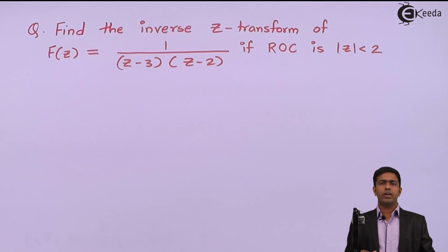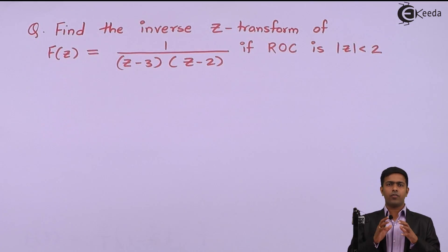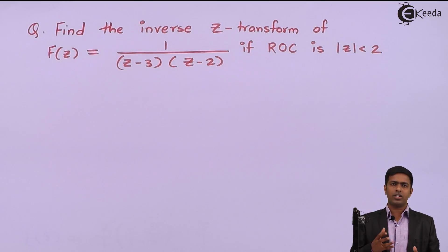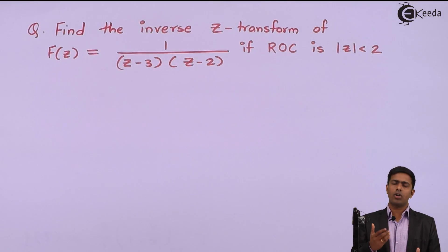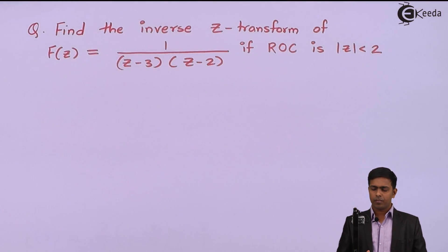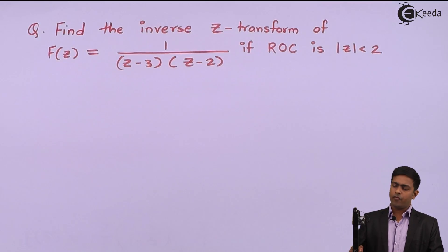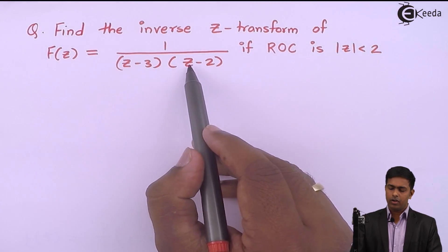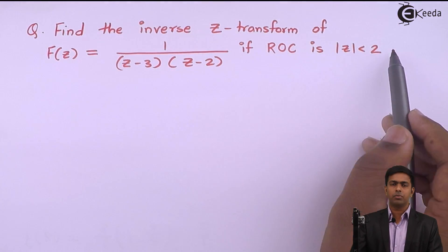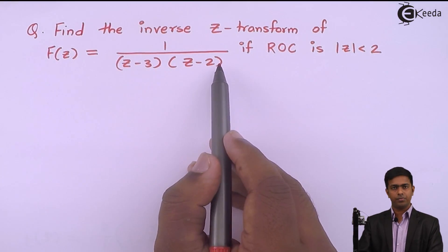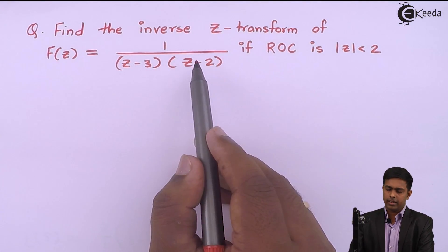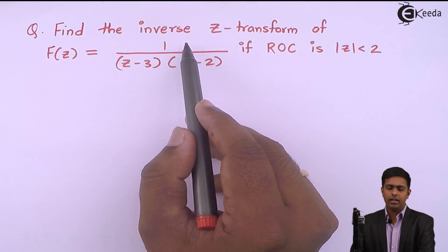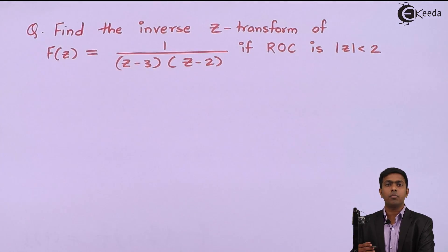What is the meaning of region of convergence? The region of convergence is the set of values of z for which the Z-transform exists or is convergent. If the value of z is less than 2, we never get zero in the denominator. But as soon as z becomes 2, we get 2 minus 2 = 0, giving infinity, and the Z-transform diverges.